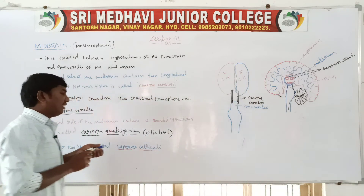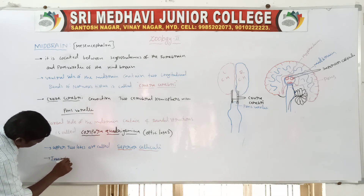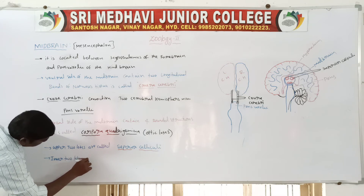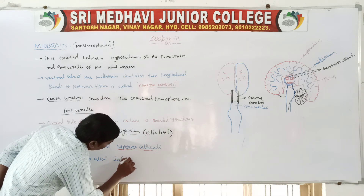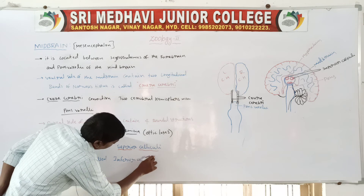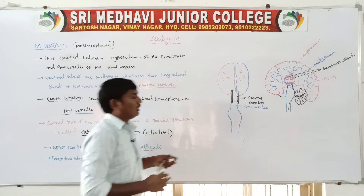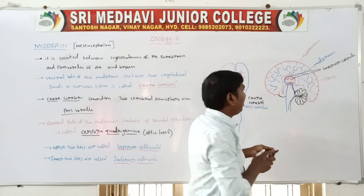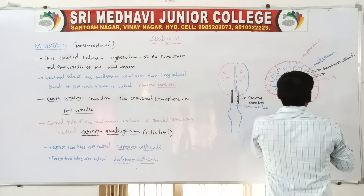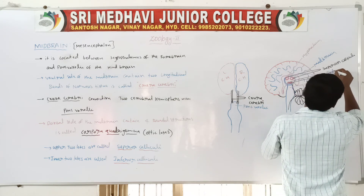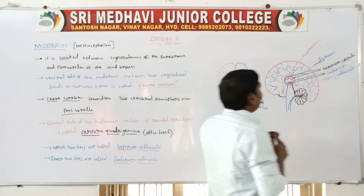The lower two lobes are called as inferior colliculi. So the upper two lobes are called as superior colliculi, and the lower two lobes are called as inferior colliculi.